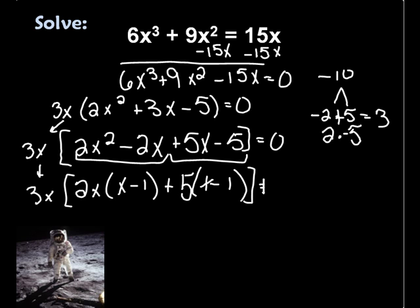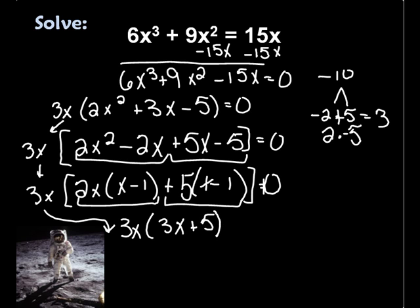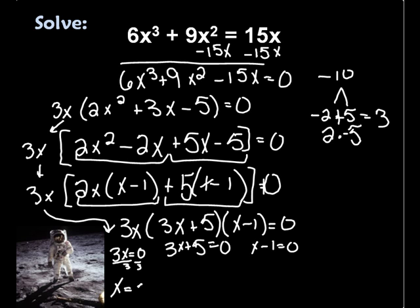This still equals 0. Now I look at these two and I look at these two. I continue to bring down my 3x—my little astronaut's getting in the way there—and I end up with 3x(2x + 5)(x - 1) = 0. Now I make each part equal to 0, so 3x = 0, 2x + 5 = 0, and x - 1 = 0. Well, when I divide by 3 here, I get x to equal 0, so that's my first answer.